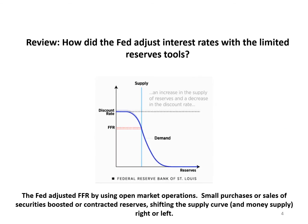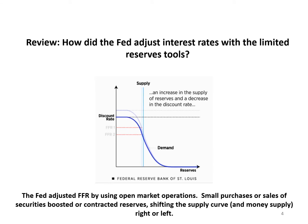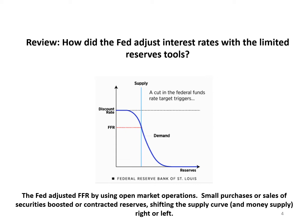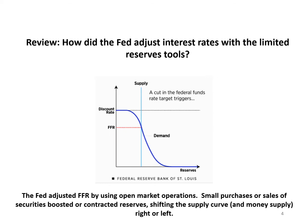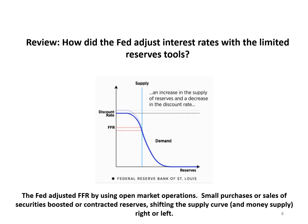Before we jump into the new toolbox, here's a quick review of the old toolbox. Prior to 2008, the Fed was operating with limited reserves in the banking system. In that framework, the federal funds rate was determined in the federal funds market — like other markets, the rate was determined by supply and demand. The graph here shows the federal funds rate at the intersection of supply and demand.